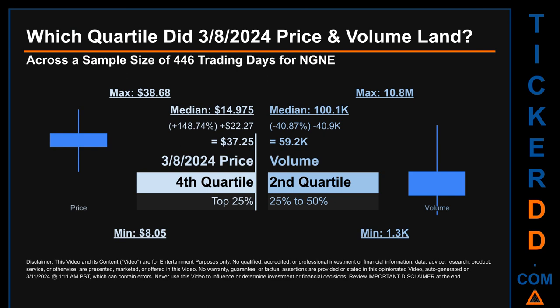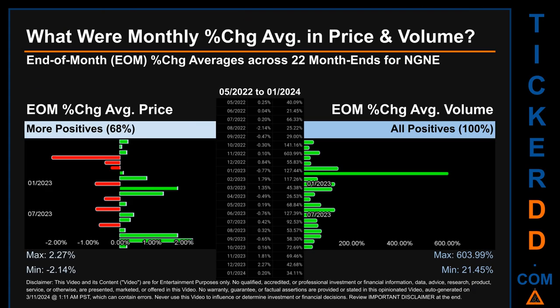Quartiles tell us about the spread of a data set by breaking it into quarters, just like how the median breaks the set in half. NGNE has a median price of $14.975, therefore the March 8, 2024 price was higher from that middle marker by 148.74%. The day's volume of 59,200 was less than the median by 40.87%.